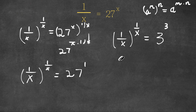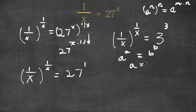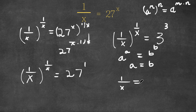Now, if we have something in the form a to the power of a is equal to b to the power of b, then a equals b. So as you can see here, 1 over x is a in this case and 3 is b, meaning 1 over x is equal to 3.